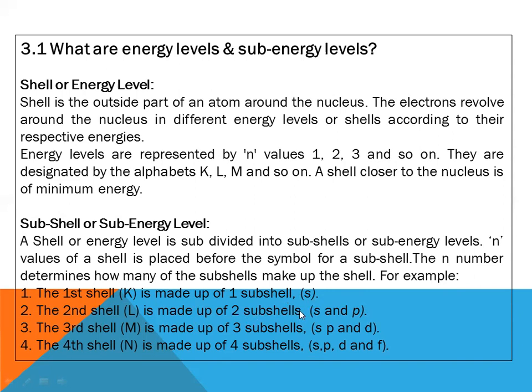The second shell (L) is made up of two sub-shells: 2s and 2p. The third shell (M) is made up of three sub-shells: 3s, 3p and 3d. The fourth shell (N) is made up of four sub-shells: 4s, 4p, 4d and 4f, and rest of the shells.